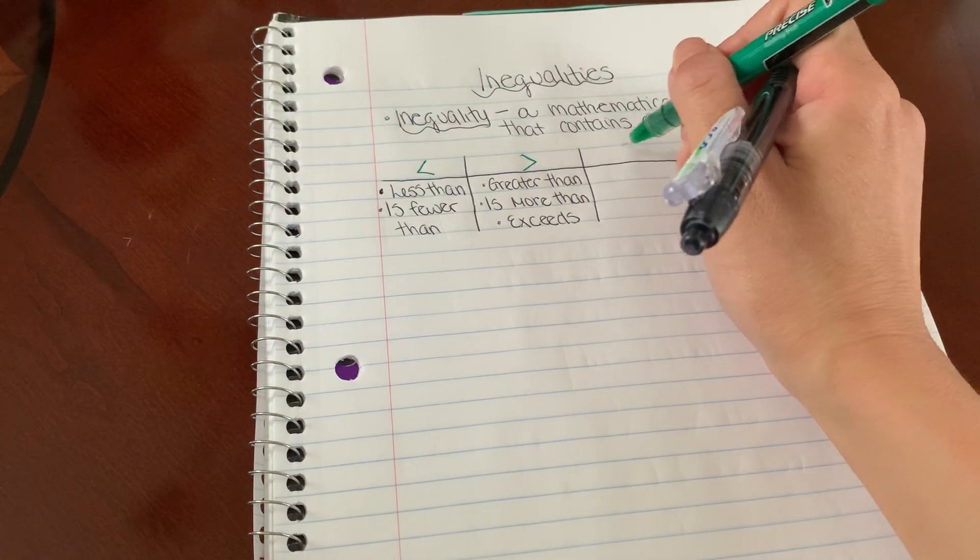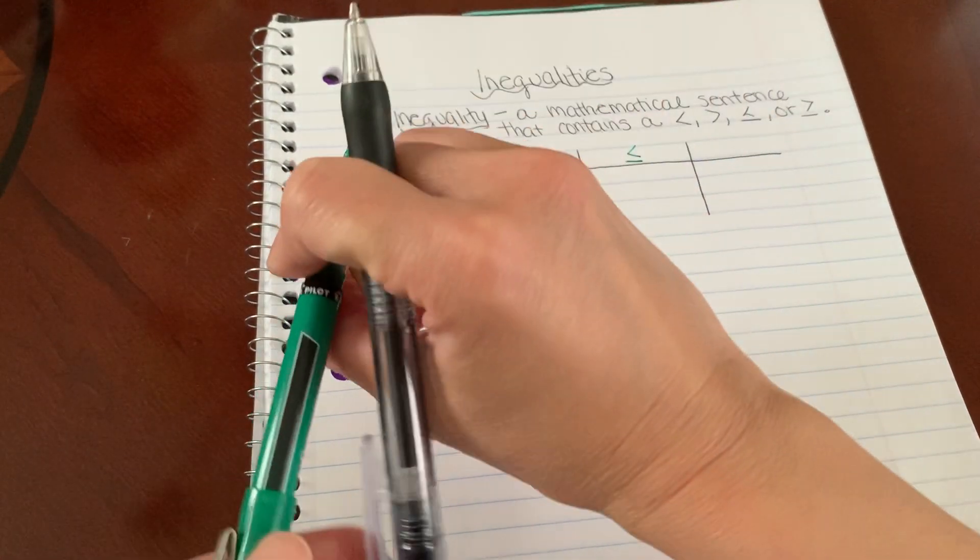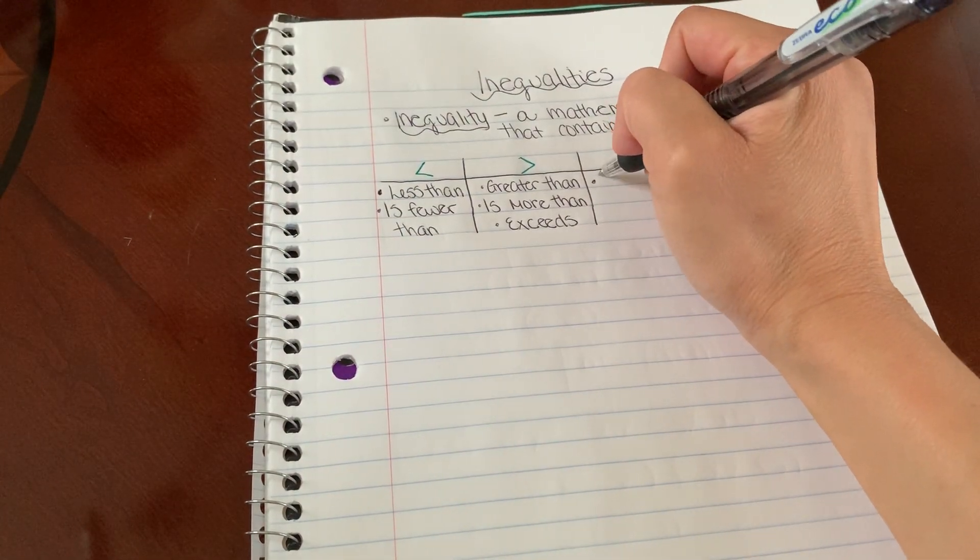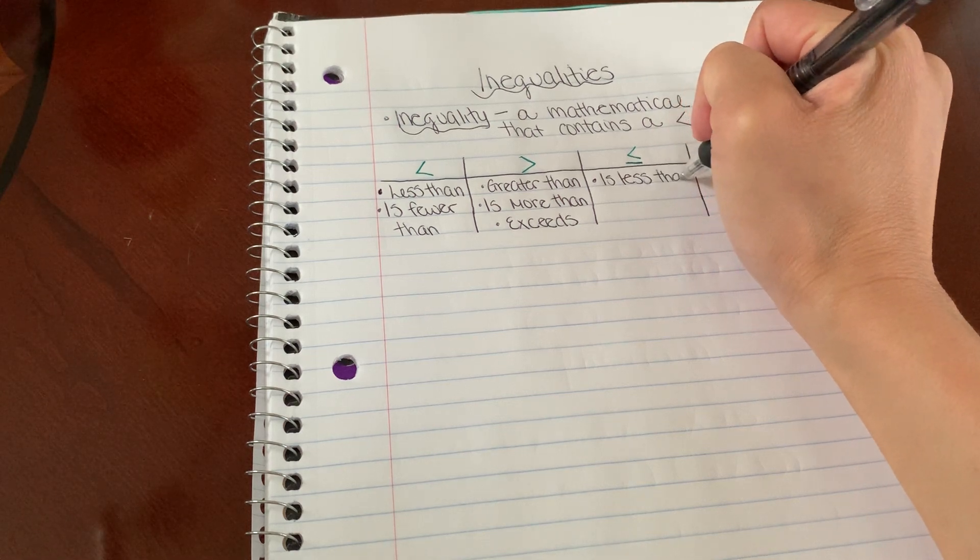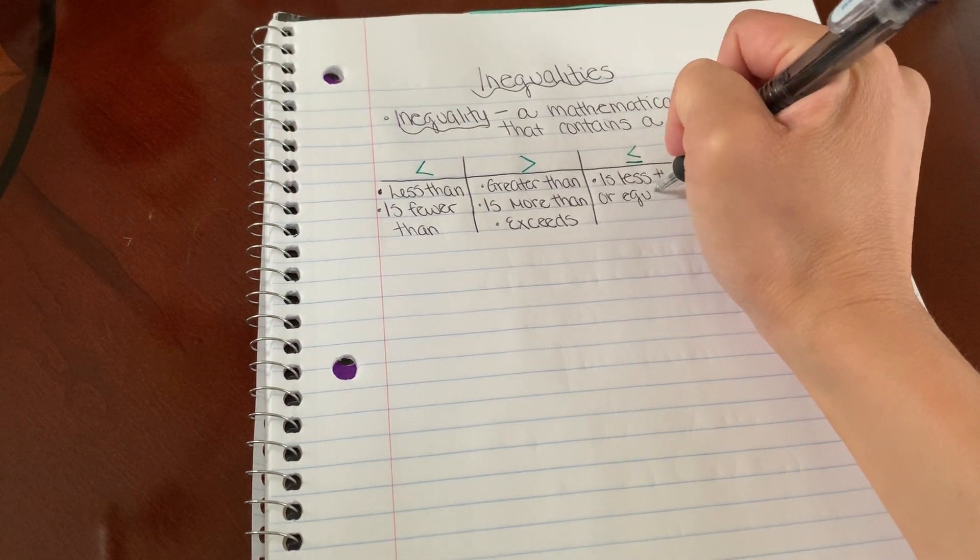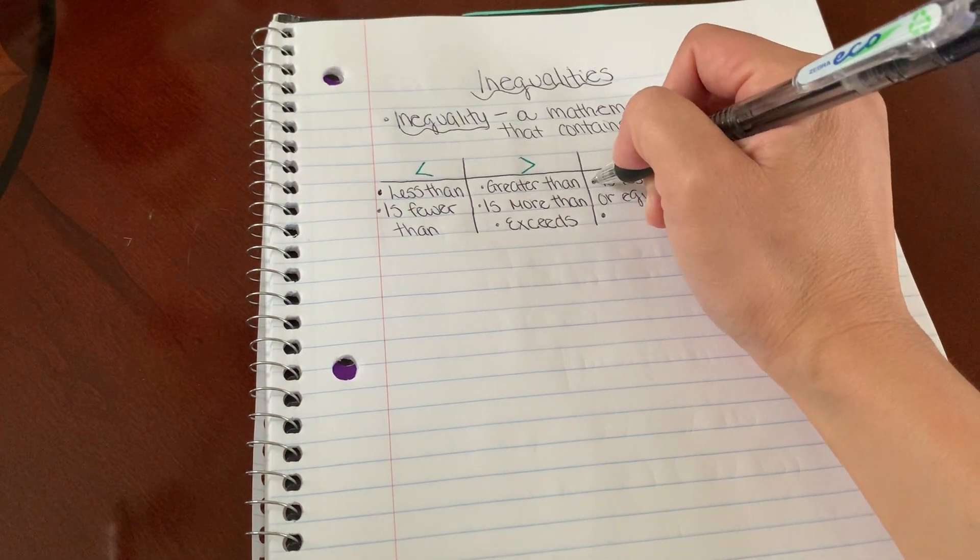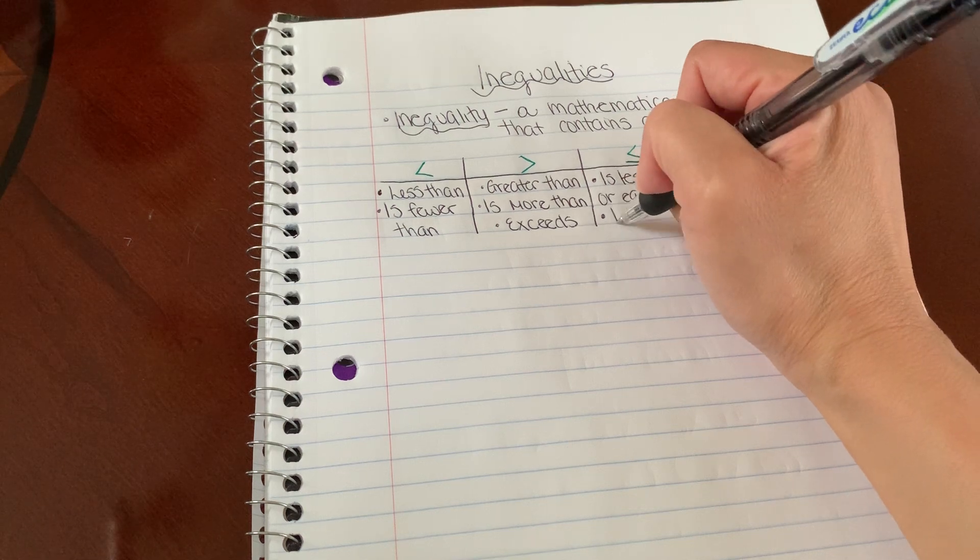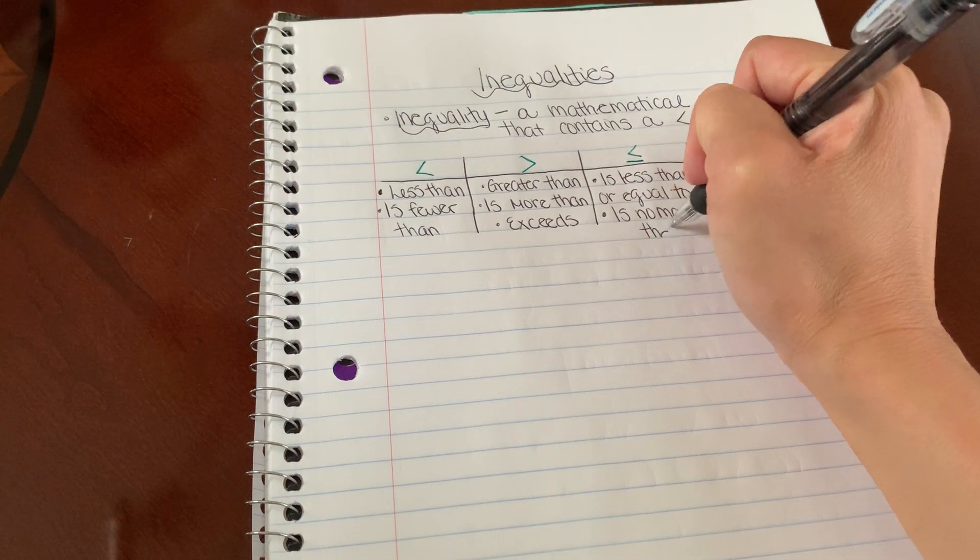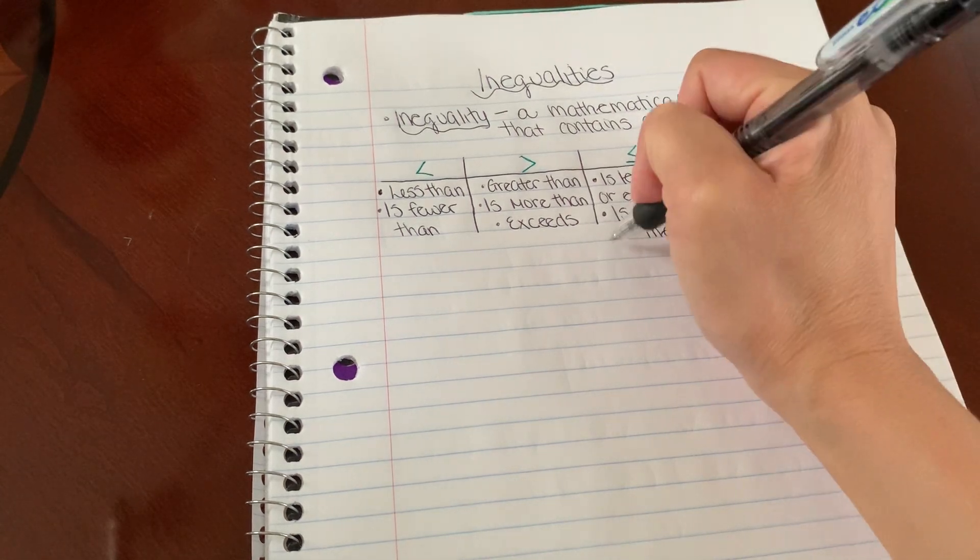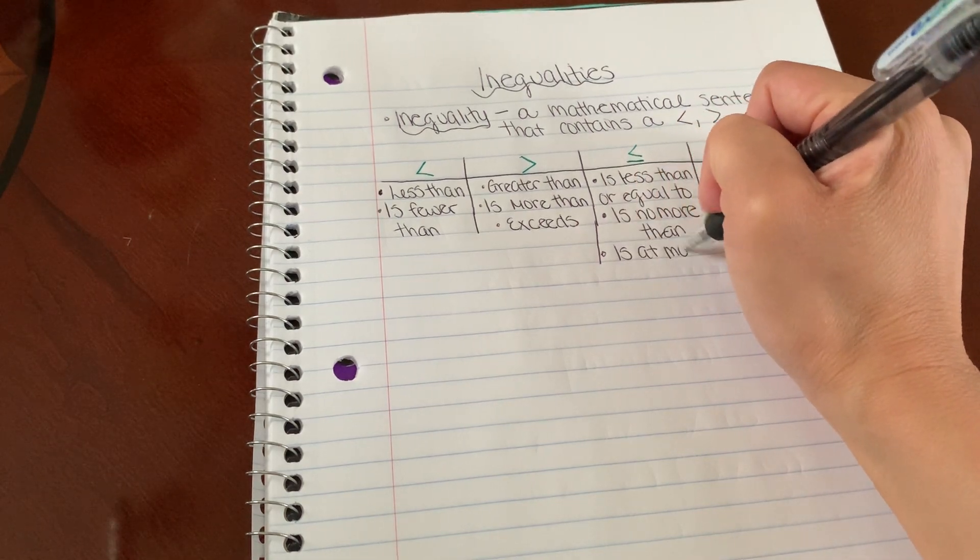We also have this less than symbol with a line under it. If it has a line under it, it means is less than or equal to. There's also a couple more definitions. You can also describe this as is no more than, or is at most.